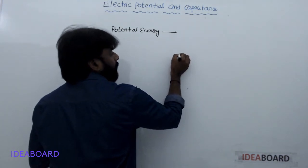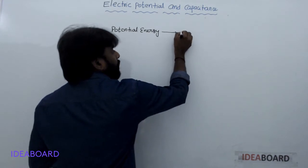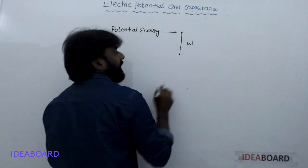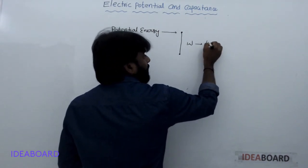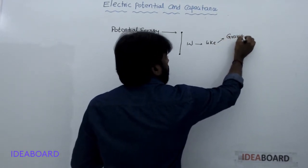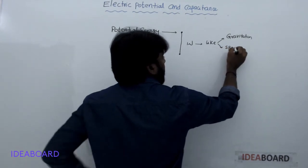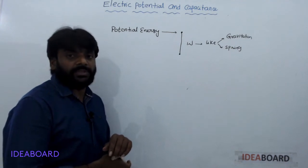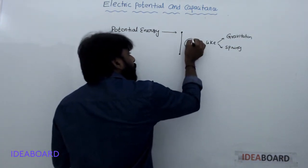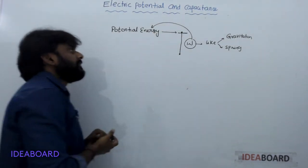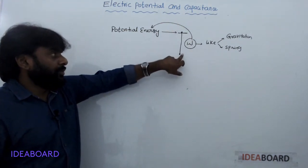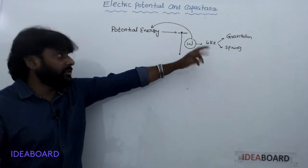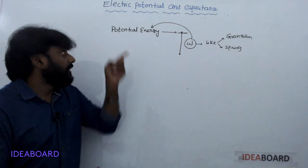For example, to move a particle from one point to another point, some external work is required against forces like gravitational force or spring force. That work done is stored in the form of potential energy in the body.